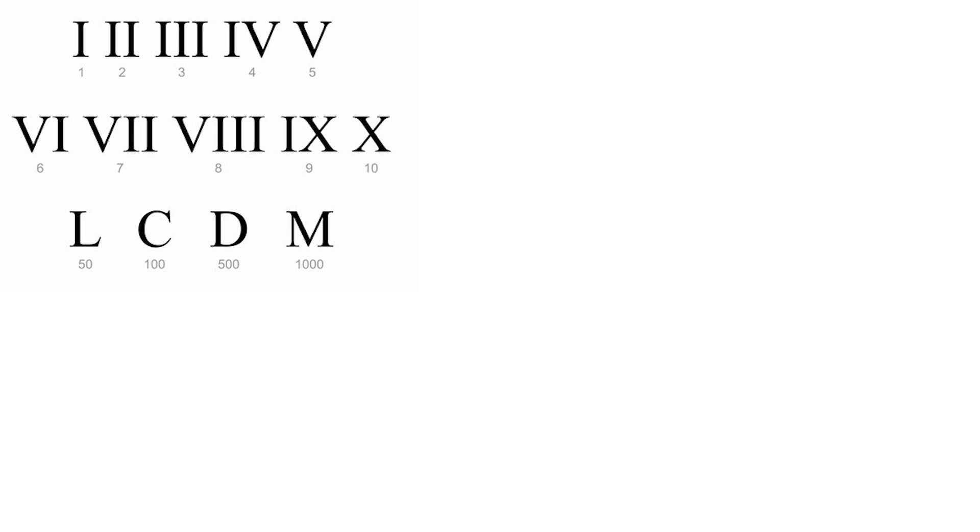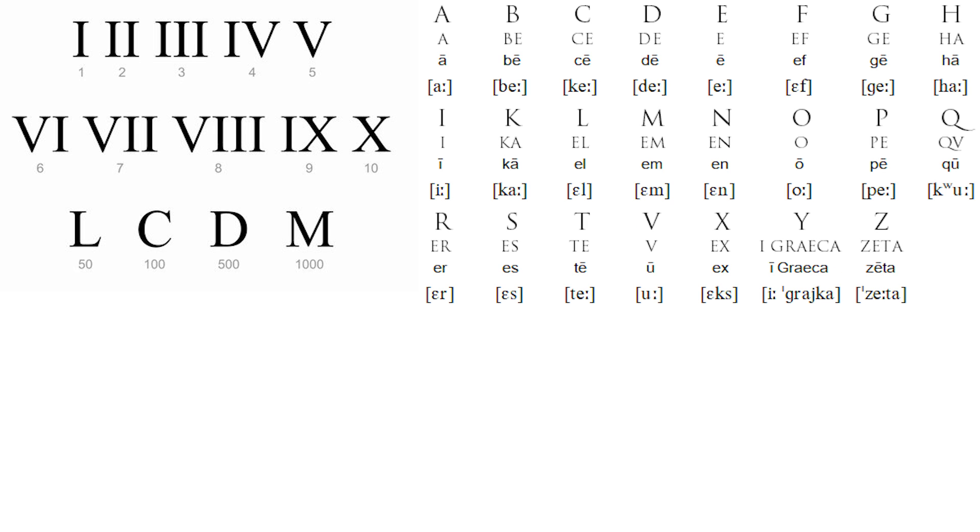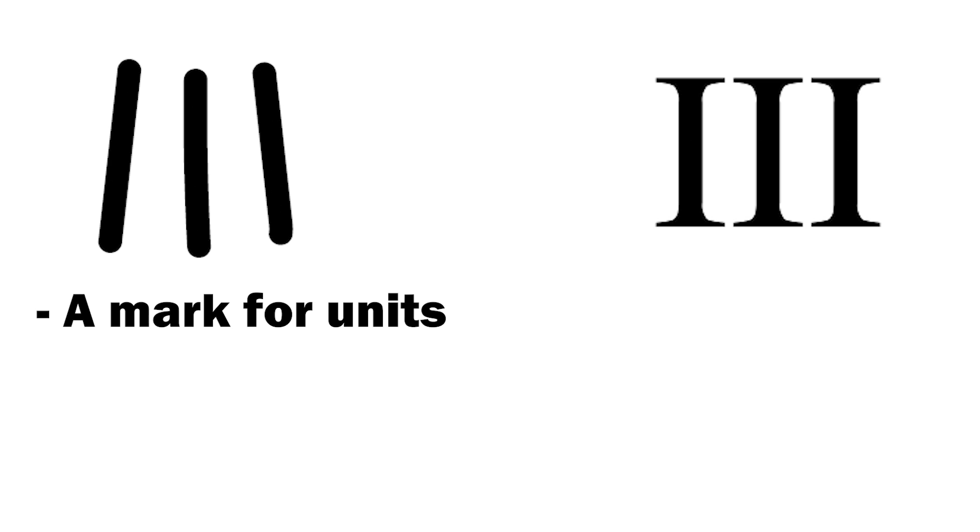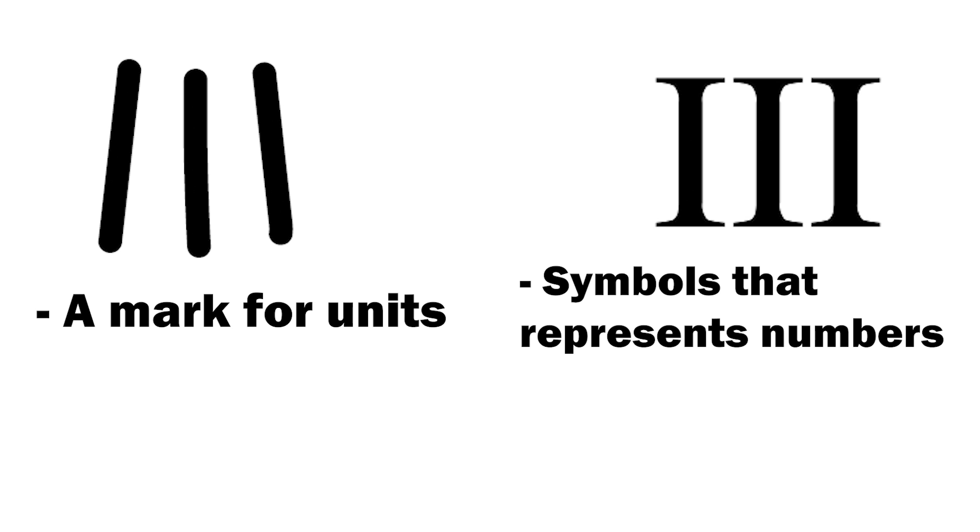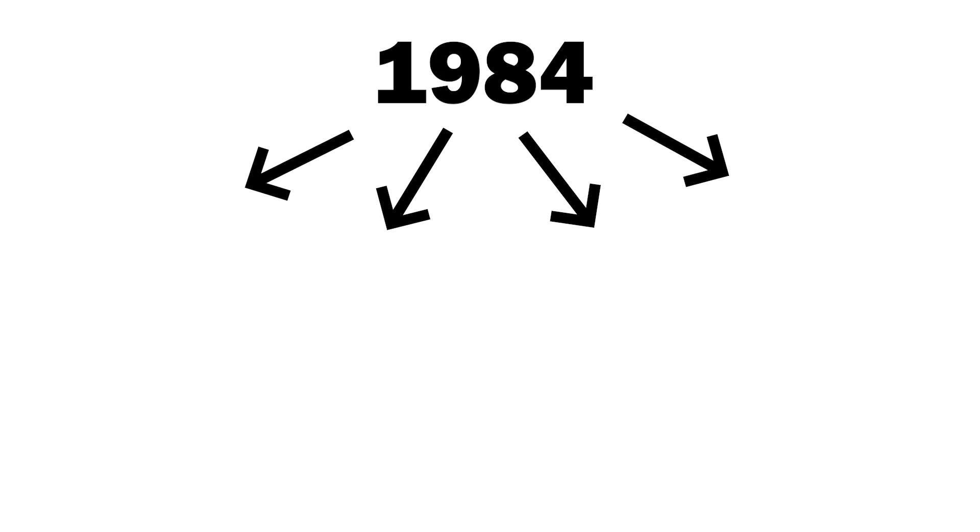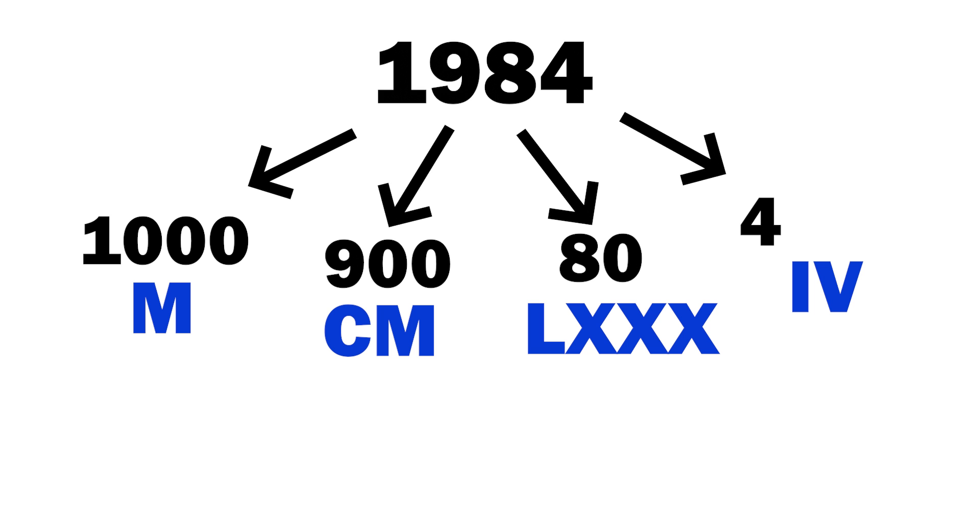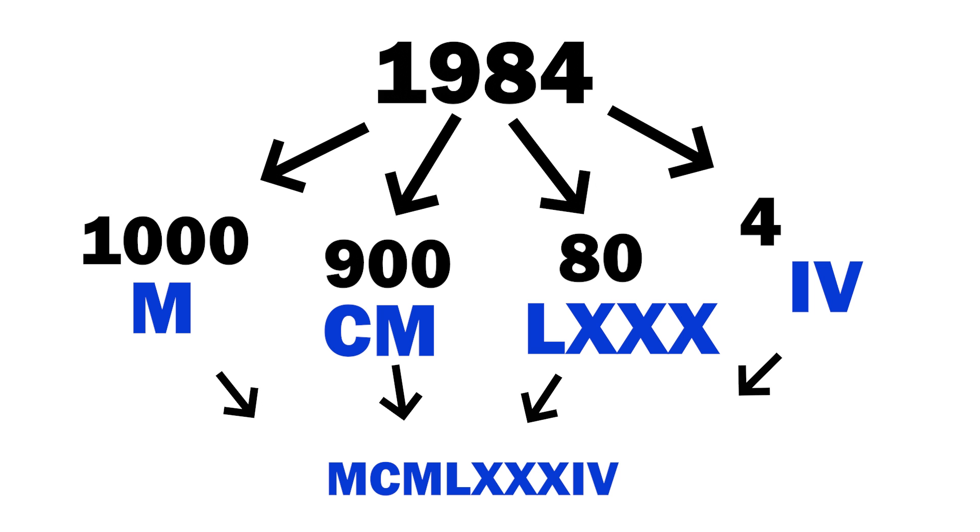A tally mark when using tallies is a simple mark or stroke used to represent individual units. But Roman numerals are based on a set of letters from the Latin alphabet for a number system. Roman numerals can represent numbers through a combination of letters, with each letter having a specific numerical value that, when added together, represents the total value of the number.